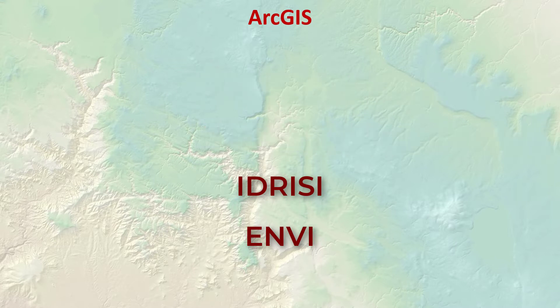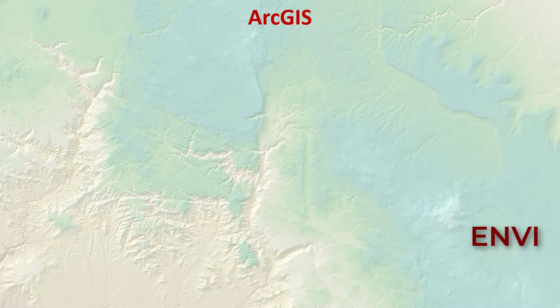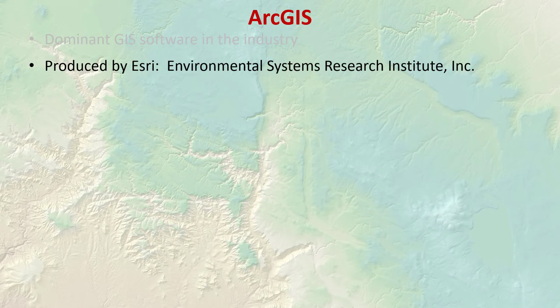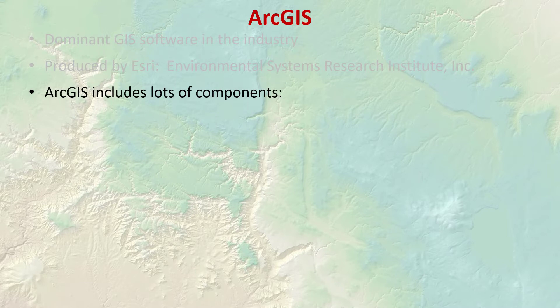ArcGIS is not a single software program, and that's a little confusing sometimes. It's a large project that includes a lot of different software. It's produced by ESRI — Environmental Systems Research Institute. ArcGIS Desktop is what we're going to be using in this class. Desktop is a primary mapping and analysis tool that is installed on individual computers and workstations, but understand that ArcGIS really covers a lot more than this.